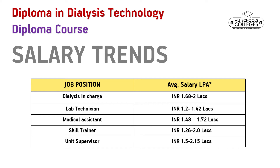If you become a skilled trainer, your salary could be 1.26 to 2 lakhs per annum. And if you become a unit supervisor, your salary could be 1.5 to 2.15 lakhs per annum. We have also tried depicting the salary trends through a bar graph.